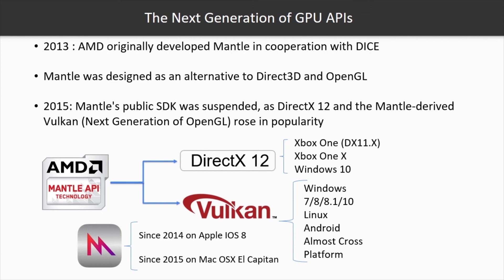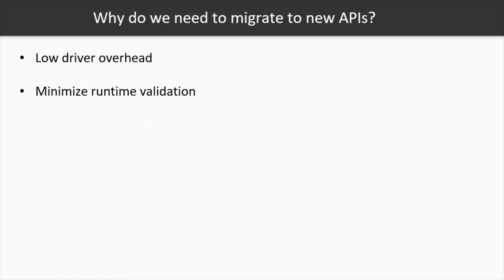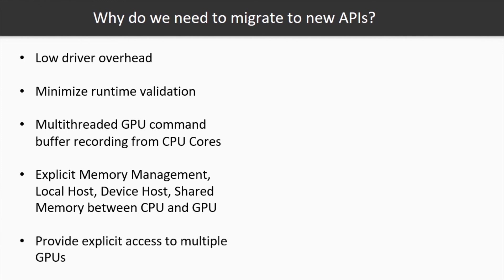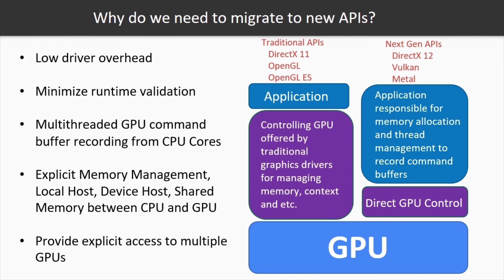Metal does not support tessellation and geometry shader stages. The question is: why do we need to migrate to new GPU APIs? Low driver overhead means you can directly communicate with the GPU for managing memory, context, threads, and so on. Minimized runtime validation means faster initialization. While DirectX 11 proposed multi-threaded rendering, the new APIs give you the ability to control all GPU cores in parallel. Memory handling is also optimized, especially for sharing memory between the CPU and GPU, and you have full control over your GPUs with lower overhead.